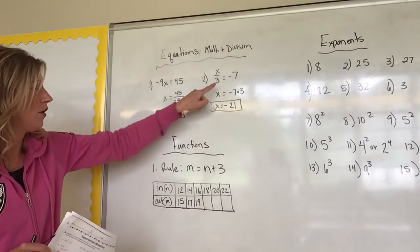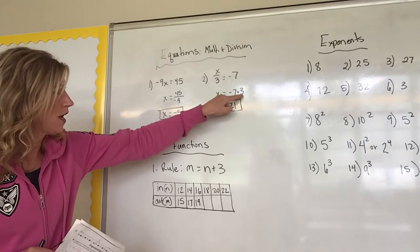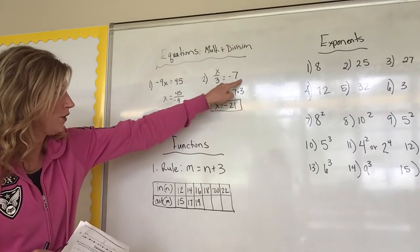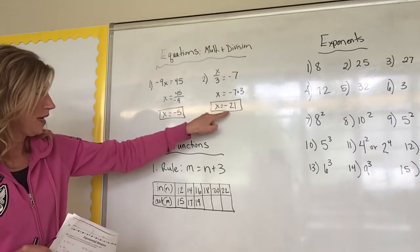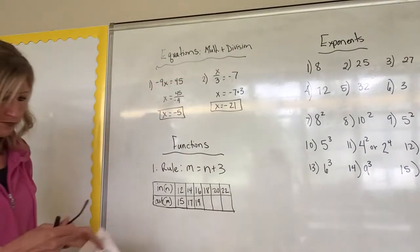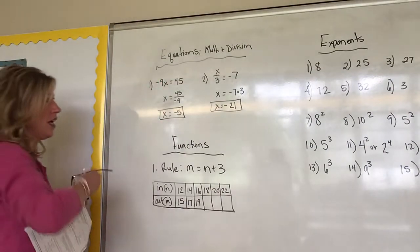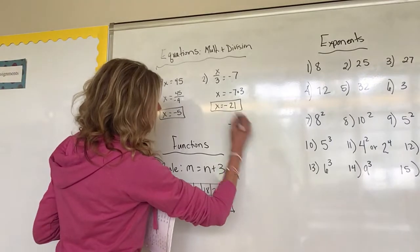Well that means I take this over to this side, and since it's division on this side, I'm going to multiply whatever I see over here times that number. So negative 7 times 3, I brought the 3 over, x equals negative 21.